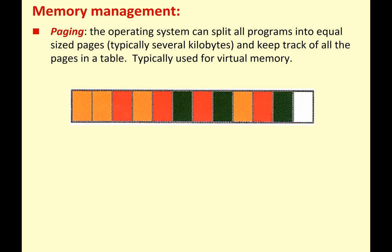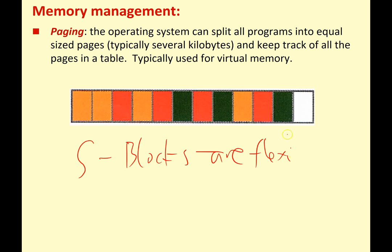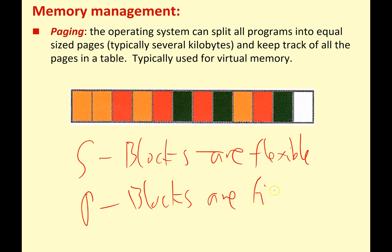Superficially, segmentation and paging might seem quite similar. However, with segmentation the blocks are flexible — these segments can vary depending on the needs of the processes running. With paging, these blocks are fixed. The pages are already set up, probably several kilobytes in size, and the pages are all fixed. So: segmentation uses flexible blocks of memory and we use it with RAM; with paging, the blocks are fixed sized and we use this for virtual memory.